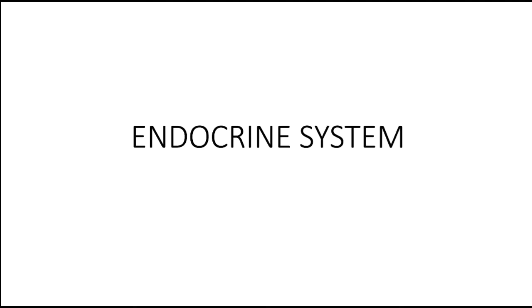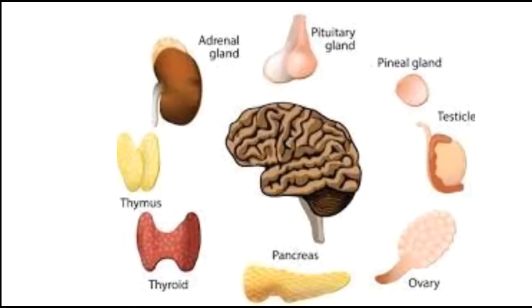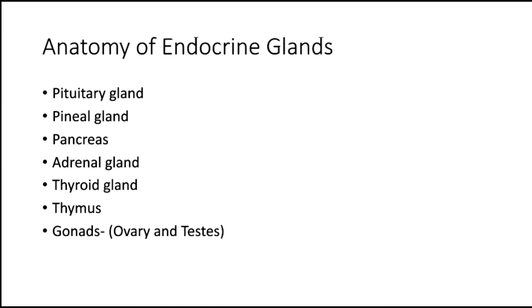Endocrine system. The endocrine system consists of ductless glands that produce chemical messengers known as hormones. In this video, we will learn the anatomy of the endocrine glands.